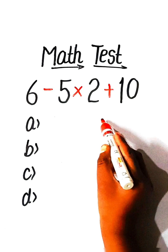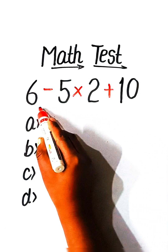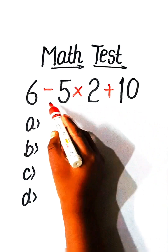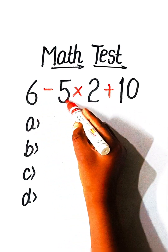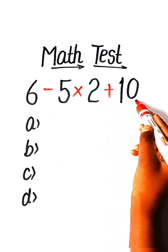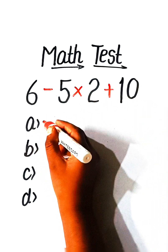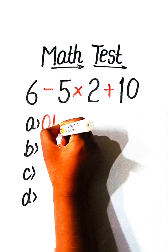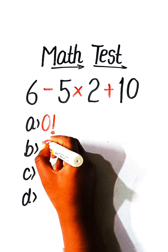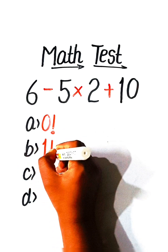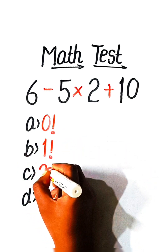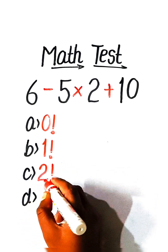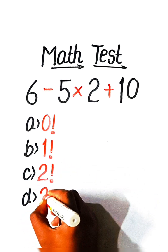Hello everyone. In this video we will solve this basic math equation: 6 minus 5 multiply by 2 plus 10 equals to what. Option A: 0 factorial, Option B: 1 factorial, Option C: 2 factorial, or Option D: 3 factorial.